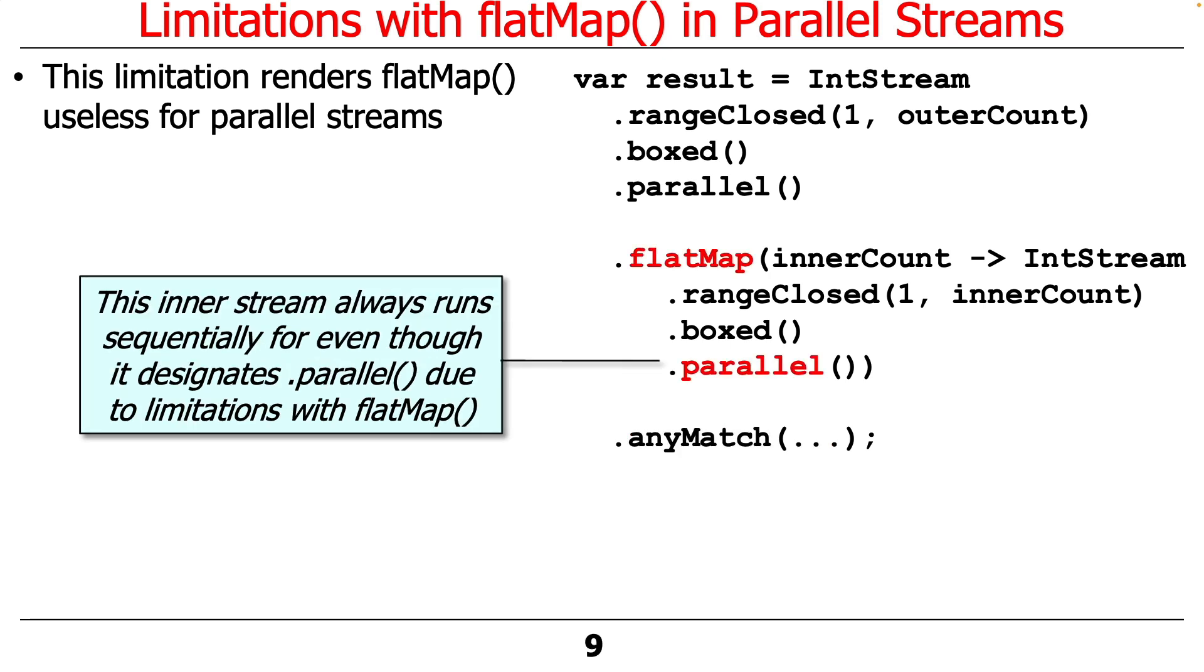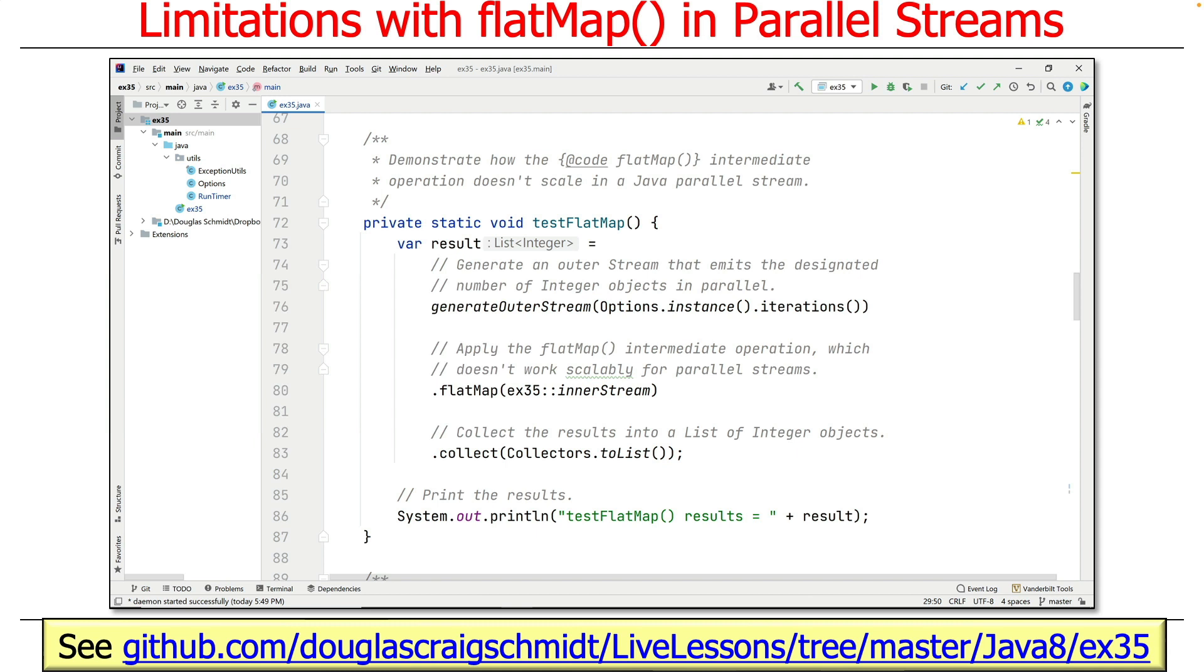So even though we said parallel, flatMap overrules us and runs everything sequentially. So I should put a big frowny face here because this is not good. And this is the code that we're going to look at in a second. We'll demonstrate this.